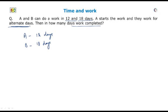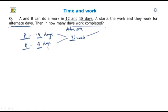Now, let's assume the total work is equal to the LCM of 12 and 18, that is 36 units. After that, we will find the one day work for A and B. A can do 36 divided by 12, that is 3 units per day. And B can do 36 divided by 18, that is 2 units per day.